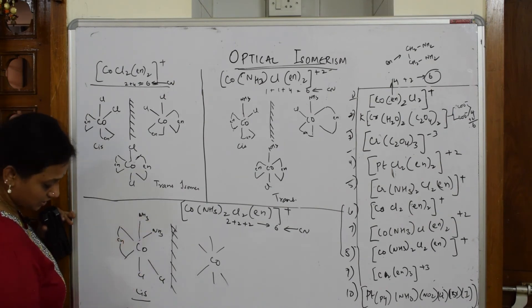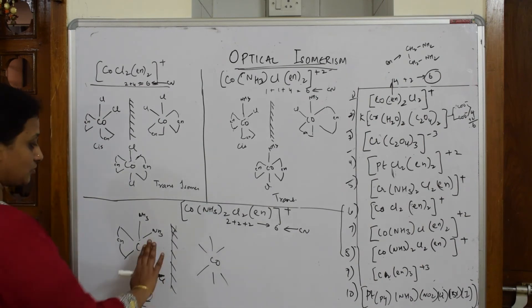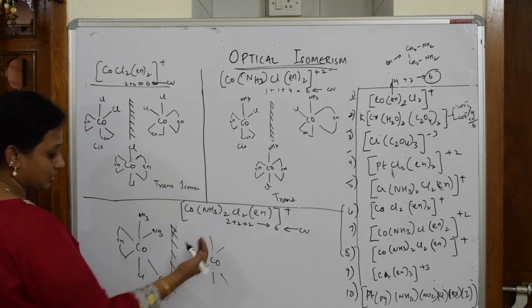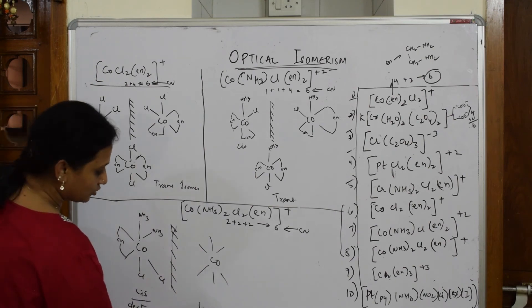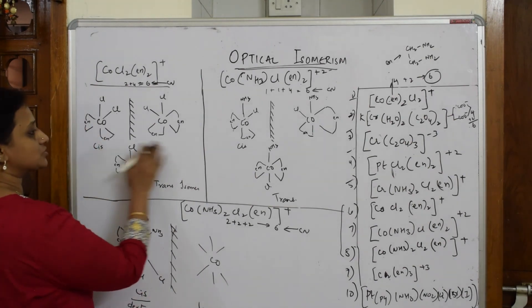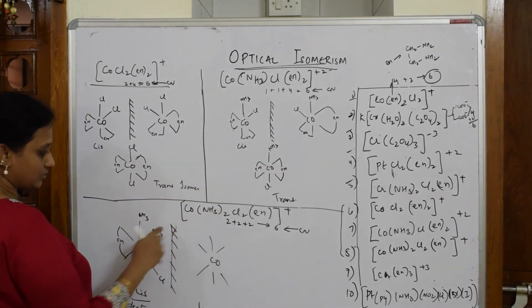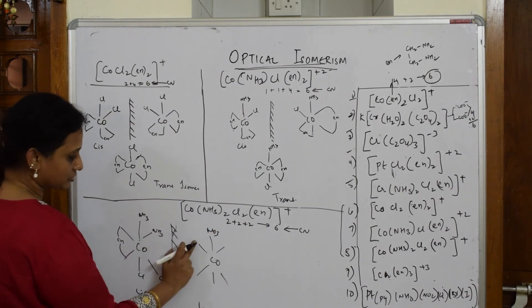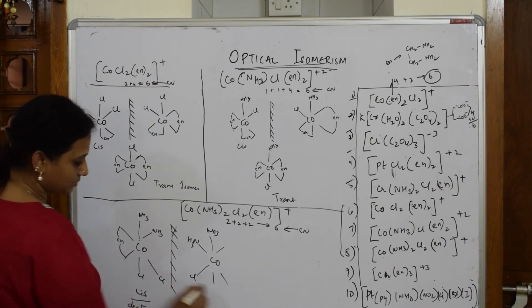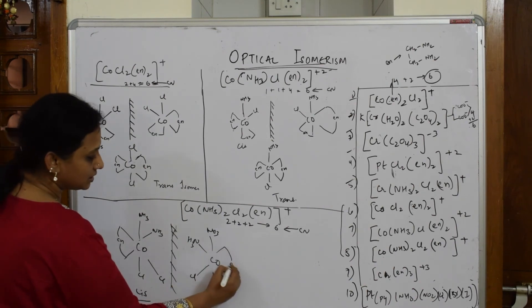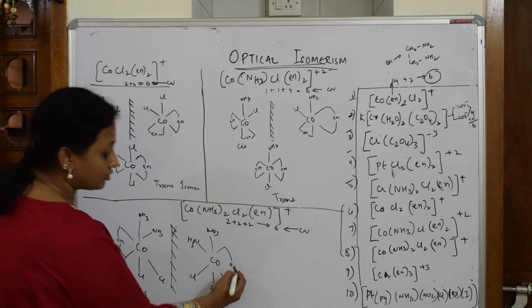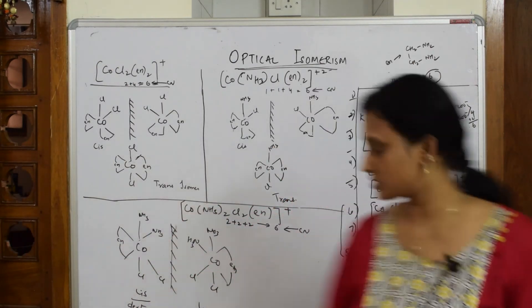Now draw the isomer of this - mirror image. You're going to start with levo, levo in this direction. Everywhere the same: dextro, levo, dextro, levo. Start rotating. First draw ammonia - the image of this will come here. Next, the image of this is here, the image of this is here, and the leftover EN.